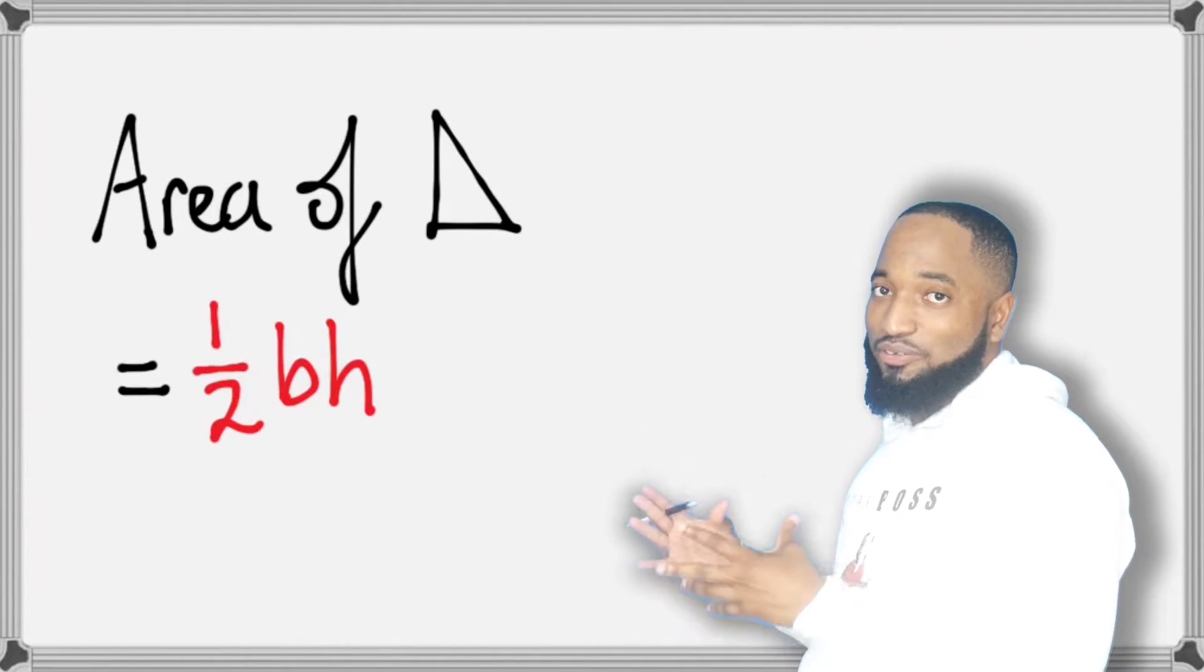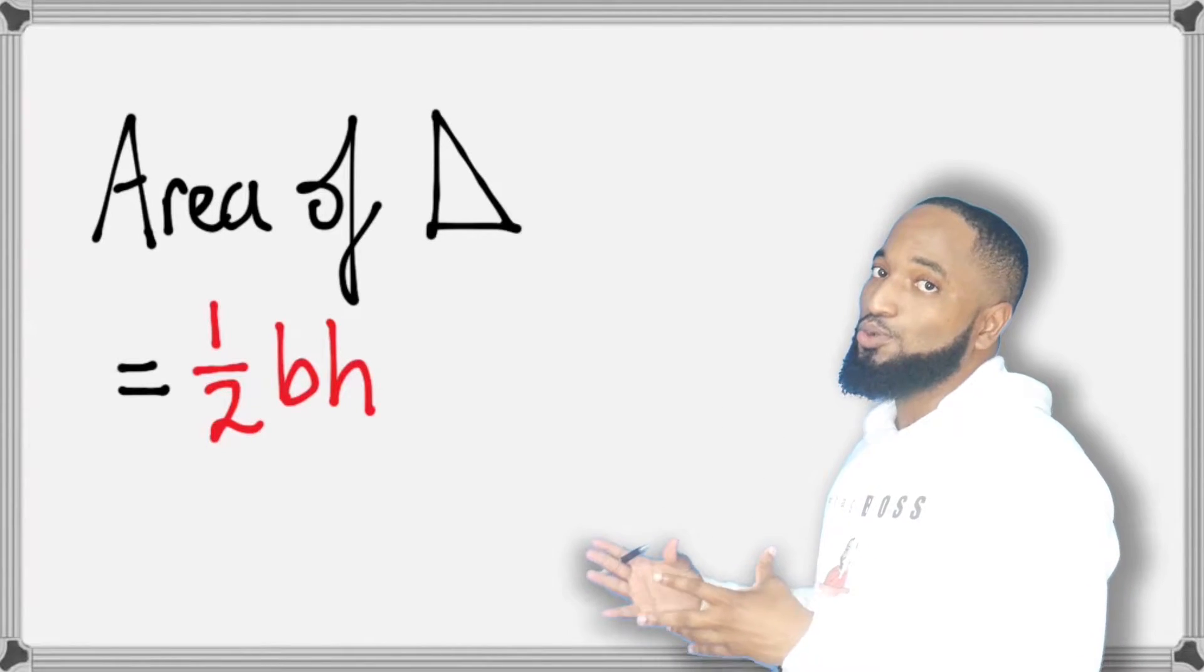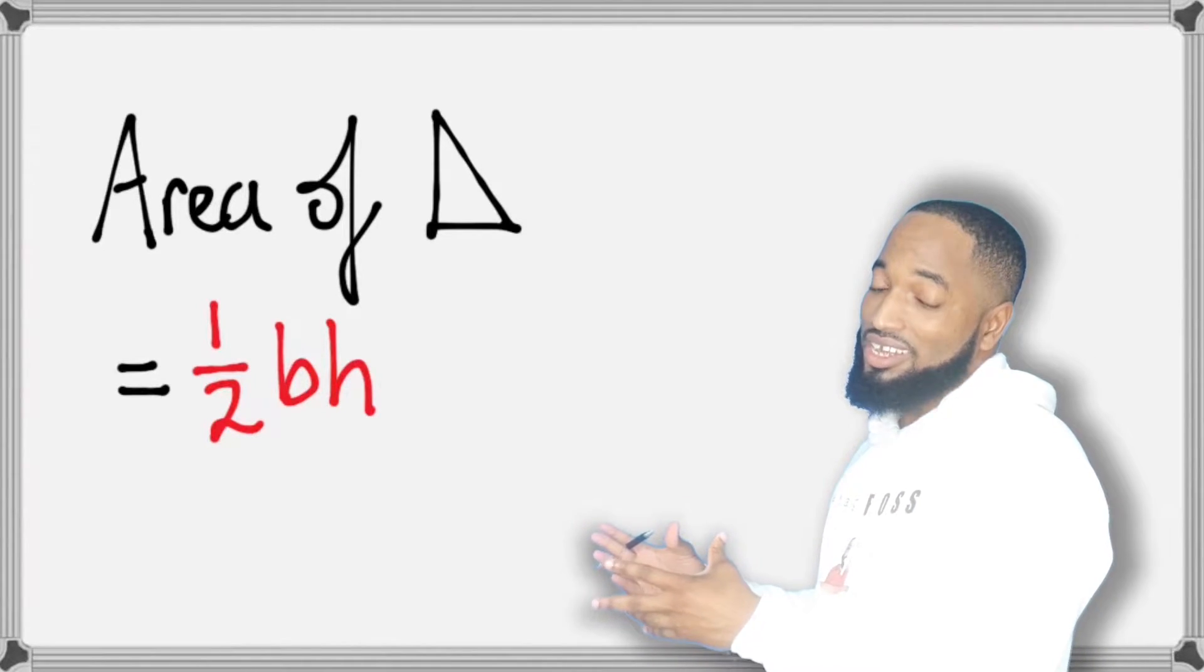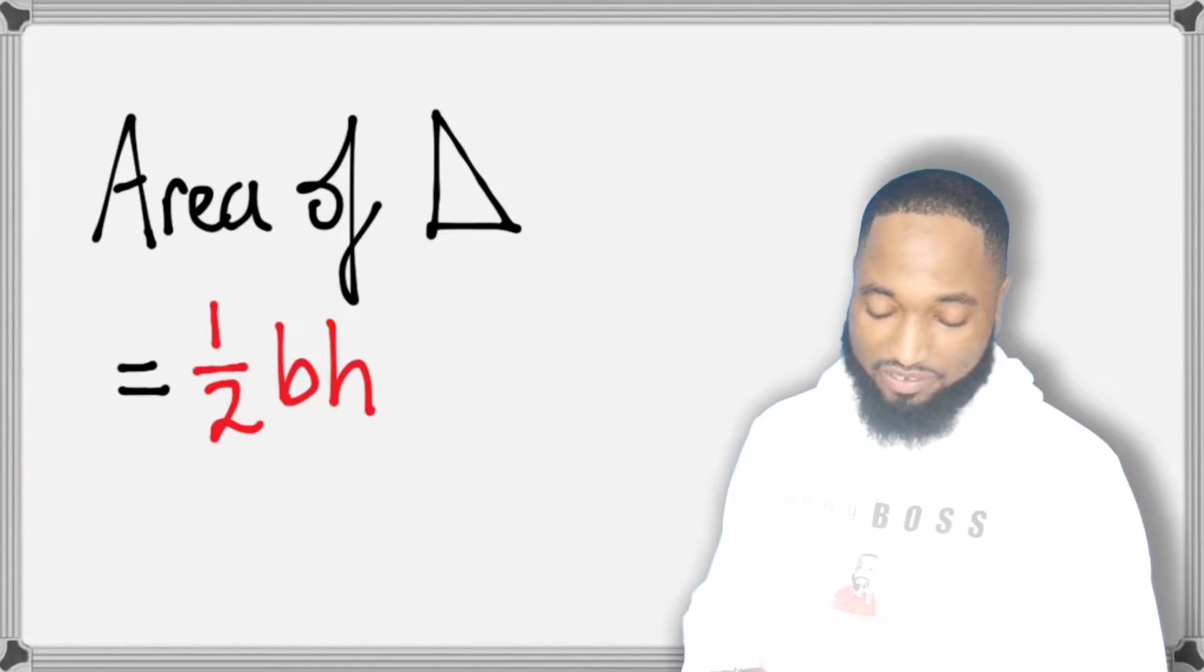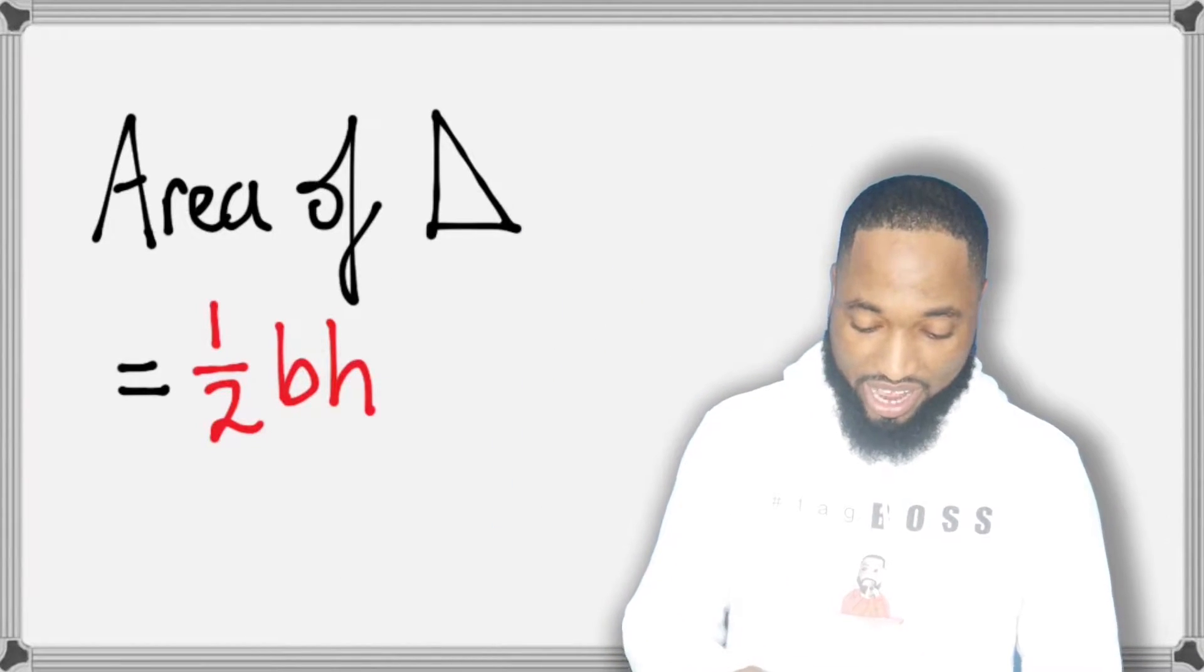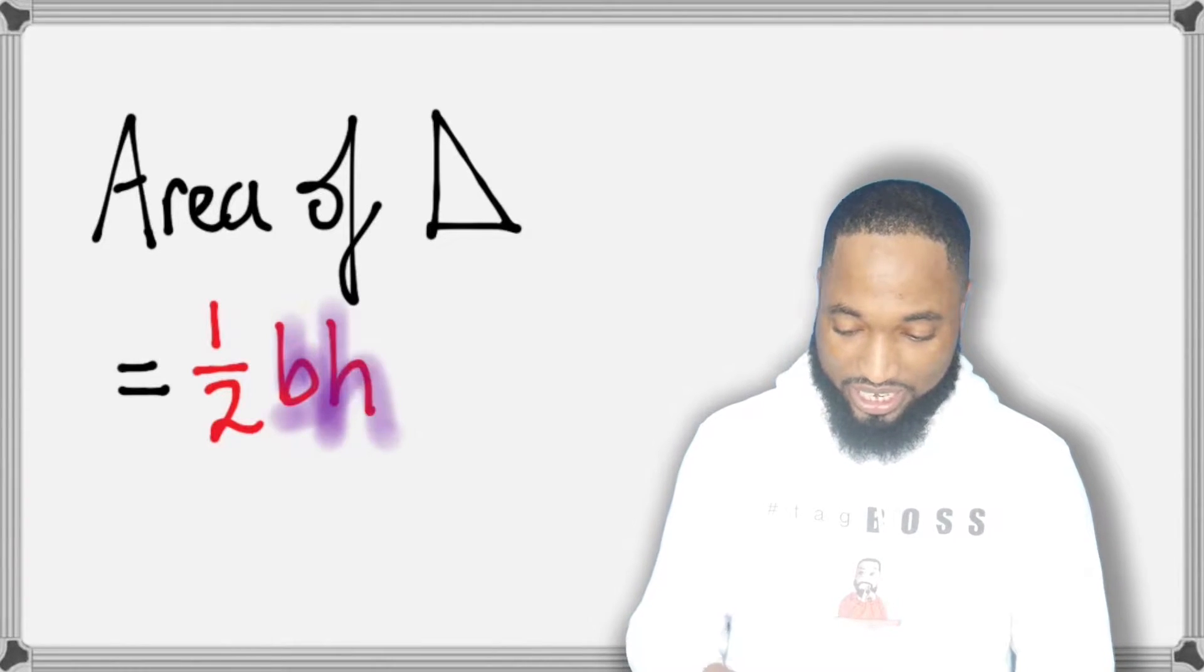So very likely, once everything working good in your school system, you would have been privy to this knowledge that area of a triangle is equal to half base by height, probably since primary school, standard four, standard three. Half base by height, right? B for base, H for height.